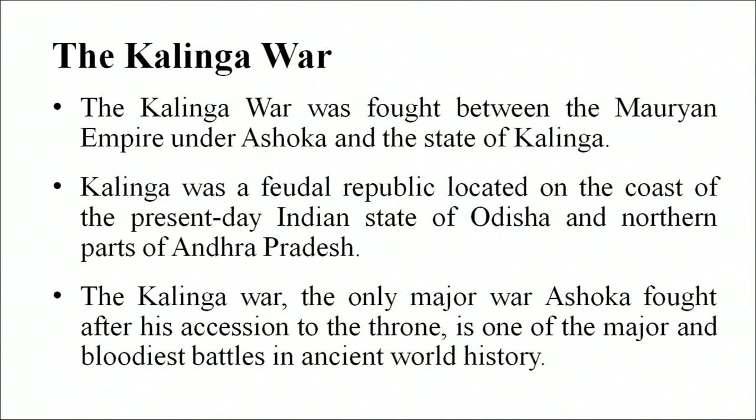The Kalinga War was fought between the Mauryan Empire under Ashoka and the state of Kalinga. Ashoka was the greatest king of Indian history. Kalinga was a feudal republic located on the coast of the present-day Indian state of Odisha and northern parts of Andhra Pradesh. The Kalinga War, the only major war Ashoka fought after his accession to the throne, is one of the major and bloodiest battles in ancient world history. The people of Kalinga were known as Utkal, the first natives of Bharat who travelled offshore to south-east for trade. For that reason, Kalinga had important ports and a powerful navy, and followed an open culture and uniform civil code.